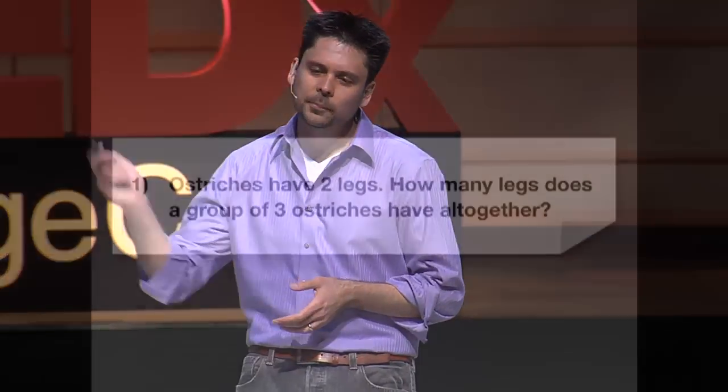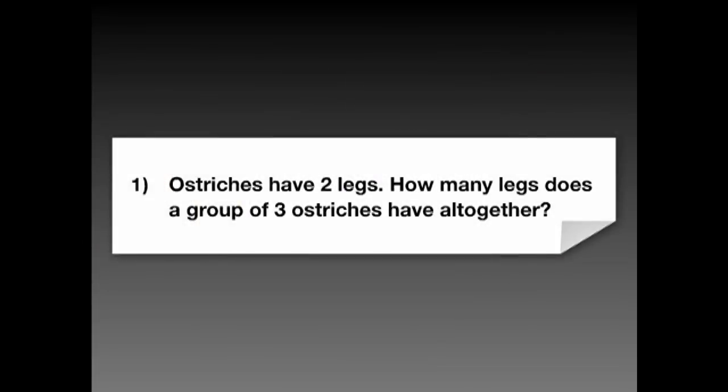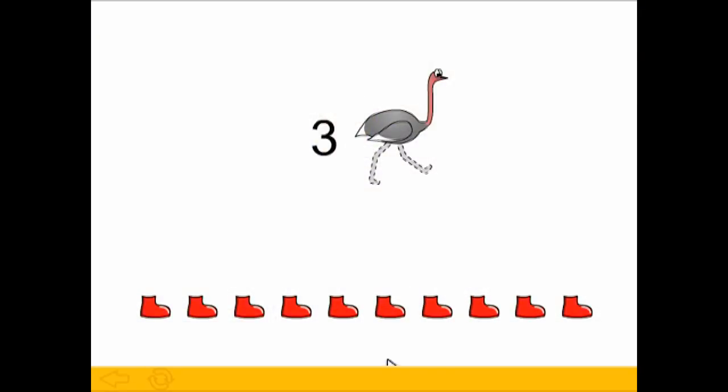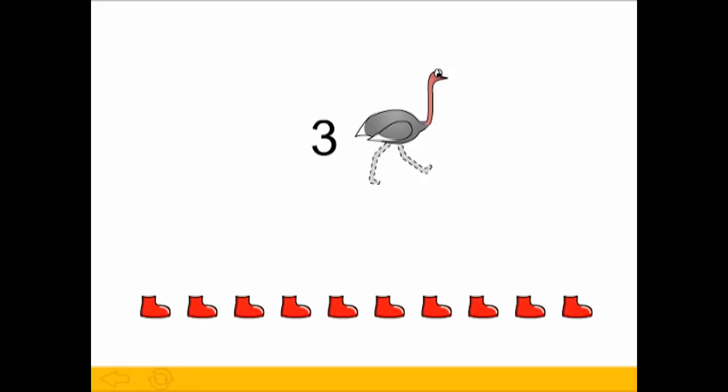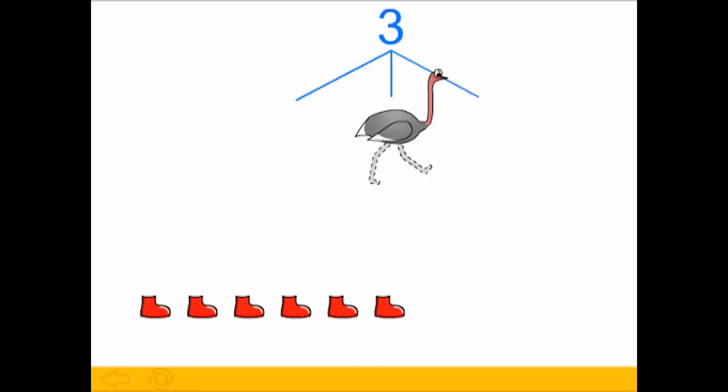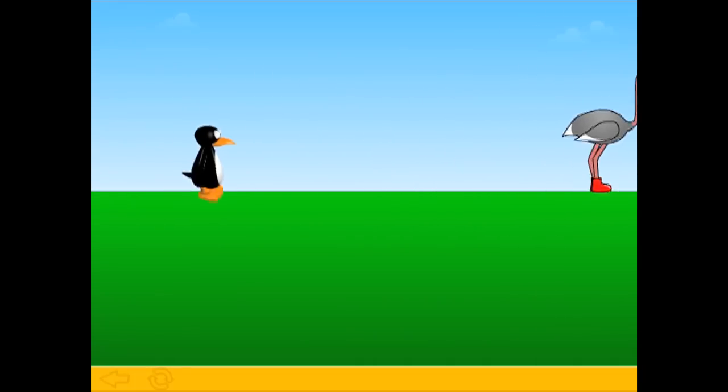This works for shapes, but what about things like word problems? How can we do those without words? Here's a typical word problem from a second-grade textbook: "Ostriches have two legs. How many legs does a group of three ostriches have all together?" We can translate this into a completely word-free problem. If you don't know what to do and you get it wrong — say you pick eight legs — it shows you why that's wrong. And when you get it right, it shows you why it's right. The feedback teaches the students. It doesn't just replace the words; it provides more instruction than the words ever did.